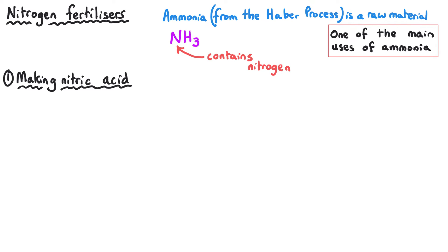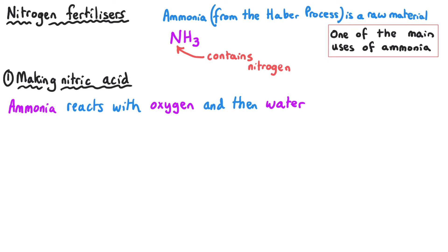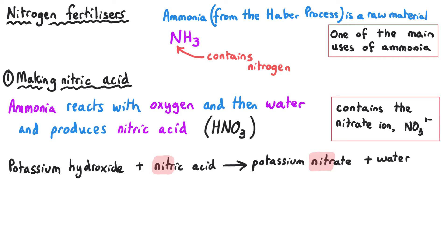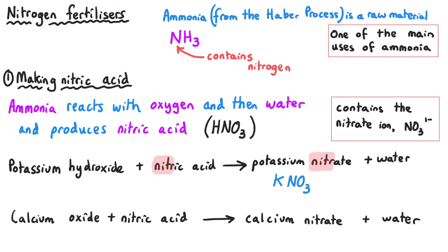First, ammonia can react with oxygen and then water to produce nitric acid. Nitric acid is an acid and can react with a base to produce nitrate salts. For instance, sodium or potassium hydroxide could react with nitric acid to produce potassium nitrate fertiliser, which contains both potassium and nitrogen. The nitric acid could also react with other substances and every time it does so it produces a nitrate salt containing the nitrogen that could be deficient from the soil.